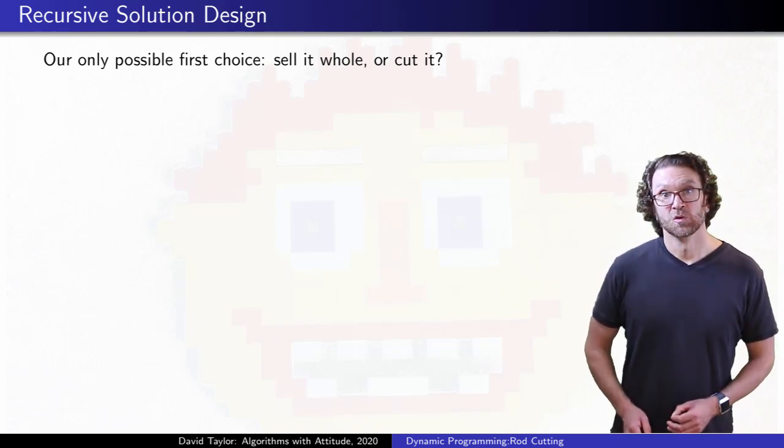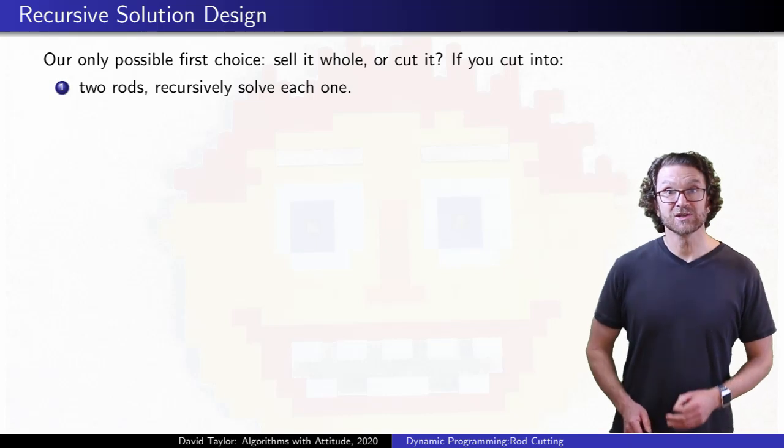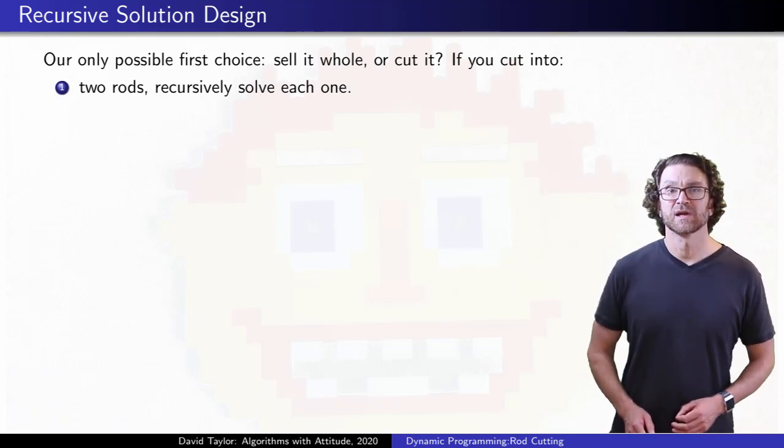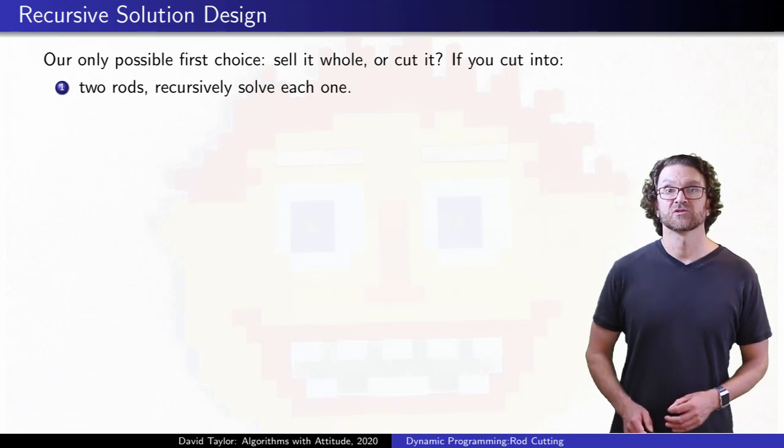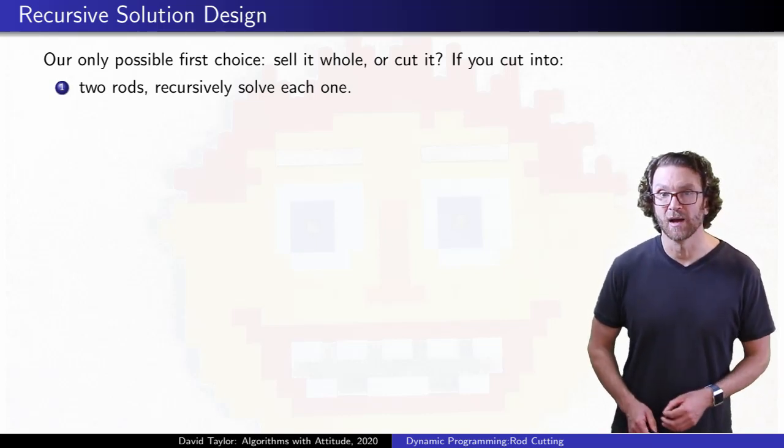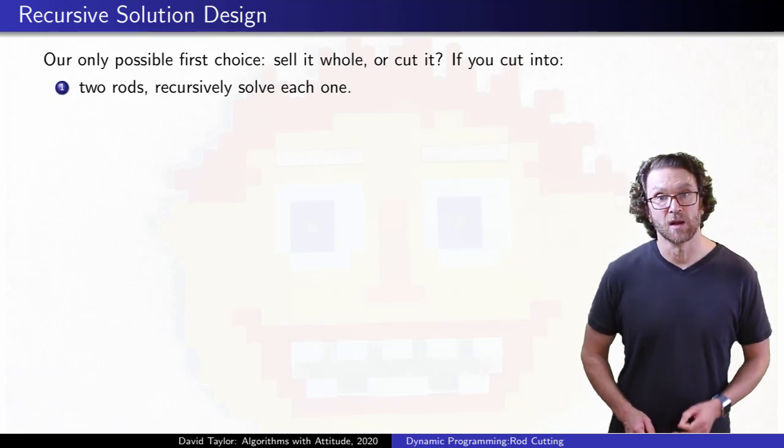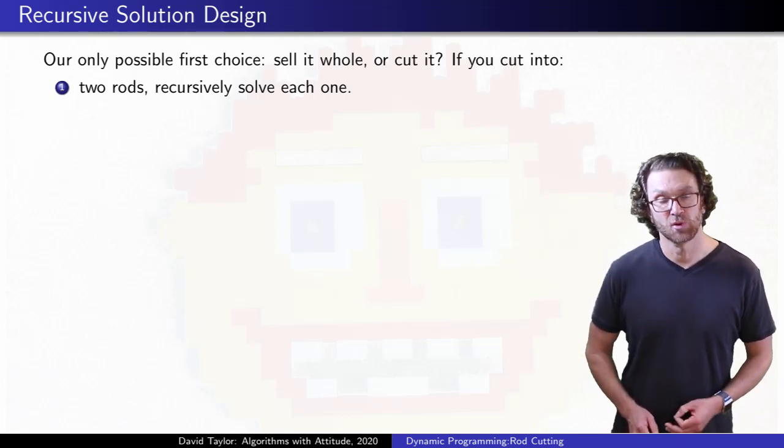If we decide to cut, we end up with two smaller rods, and each looks just like the original problem. We want to maximize how much we get for each of them, to maximize how much we get for both of them combined. The fact that those subproblems look just like the original problem is key for dynamic programming.